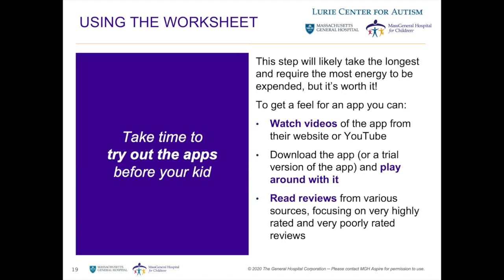With their priorities set, the parent is ready to start looking at the apps. They spend some time reading up on the apps online, watching tutorial videos, and reading more reviews. They rule out one app based on the tutorial videos and then download the rest to try them. Whenever possible, they use a limited free version of the app to get a feel for it without having to pay up front.